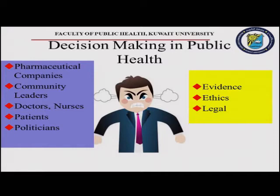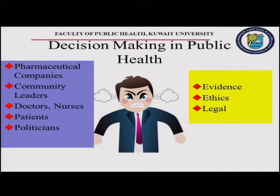By right, we should use evidence — information that is non-biased — and we have to take care of ethical and legal considerations when we make any decision. However, many public health professionals are influenced in their decisions by other entities: pharmaceutical companies, community leaders, and doctors and nurses who give priority to certain groups of patients in their speciality. For example, oncologists focus mainly on cancer patients, and endocrinologists focus mainly on endocrine conditions. But as a health system manager, you have to look at the total picture and balance these. We are also influenced by patients and politicians.